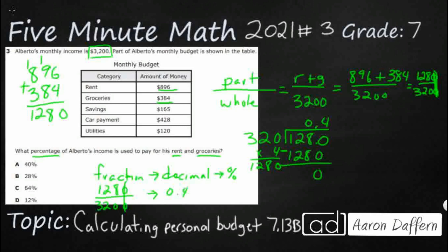So our fraction 1,280 over 3,200 simplified to the decimal 0.4. To convert a decimal to a percent, you move the decimal point two places to the right — like multiplying by 100. That gives us 40%. So a little less than half of Alberto's income is used to pay for rent and groceries, and our answer is A.